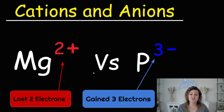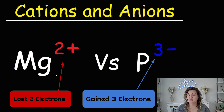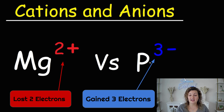Here are two examples. We have a cation example of magnesium positive two — it lost two electrons to become positively charged. And then we have an anion: phosphorus gained three electrons in order to be negatively three charged.